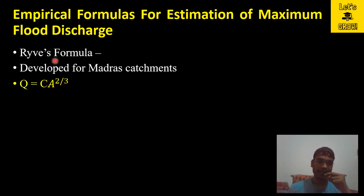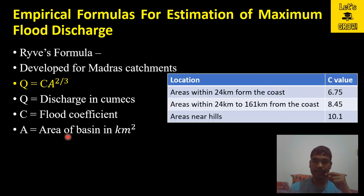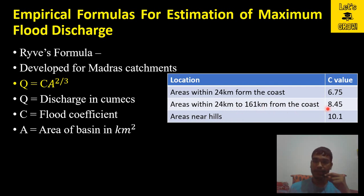The second formula is Ryve's formula, developed for the Madras catchments. The formula is Q = C × A^(2/3), where Q is discharge in cubic meters per second, C is the flood coefficient, and A is the area of basin in square kilometers. For areas within 24 kilometers from the coast, C is 6.75; for areas 24 to 161 kilometers from the coast, C is 8.45; and for areas near hills, C is 10.1.